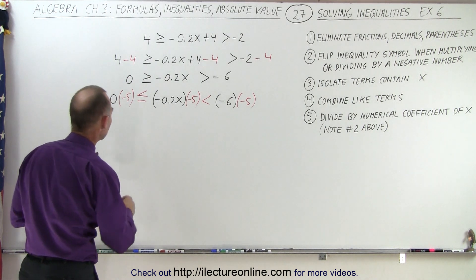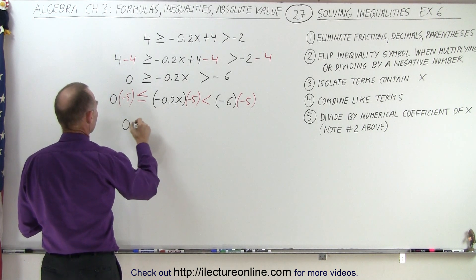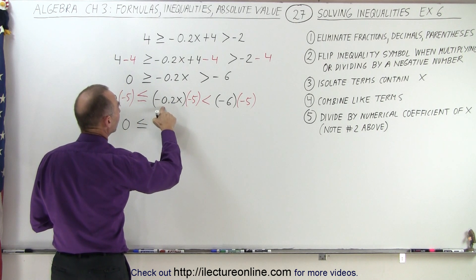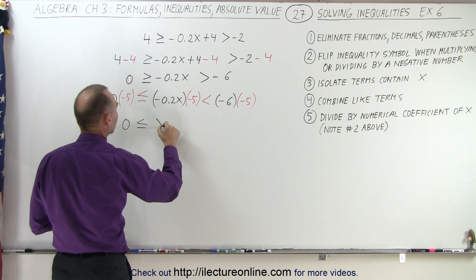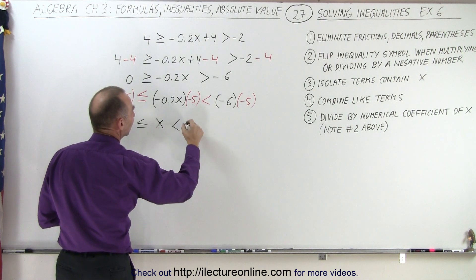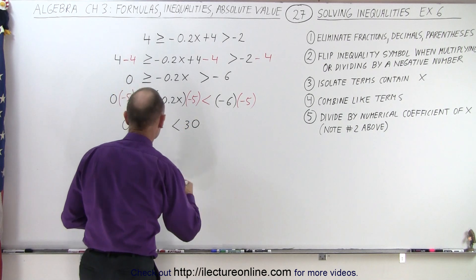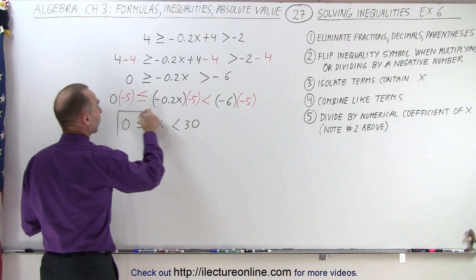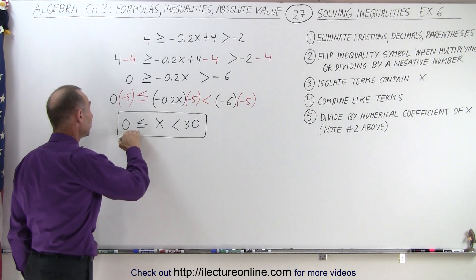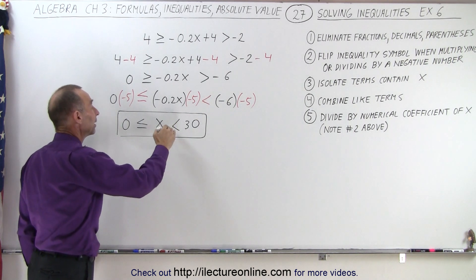Now we're ready to continue. 0 times negative 5 is still 0, less than or equal to negative 5 times 0.2, that becomes positive x. And negative 6 times negative 5 is positive 30. And that in itself is our solution: all values that are greater than or equal to 0 and at the same time less than 30.